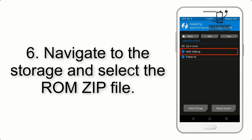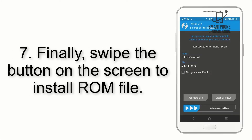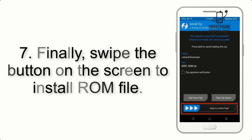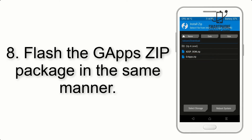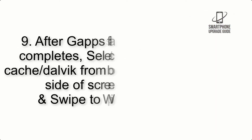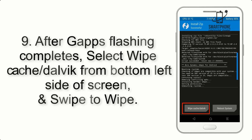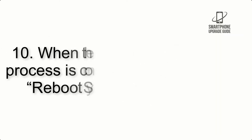Step 6: Navigate to the storage and select the ROM zip file. Step 7: Swipe the button on the screen to install the ROM file. Step 8: Flash the GApps zip package in the same manner. Step 9: After GApps flashing completes, select Wipe Cache and Dalvik from the bottom left side of the screen and swipe to wipe.